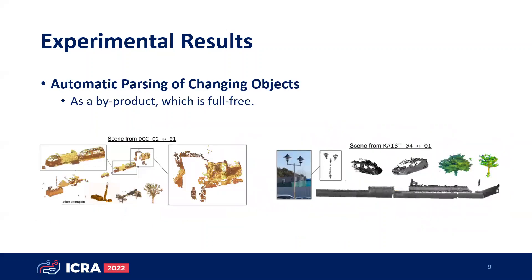Also, as a byproduct of the automatic change detection, we can segregate low-dynamic objects automatically. We hope this self-labeling could boost understanding of the relationship between the shape and the ephemerality of an object.